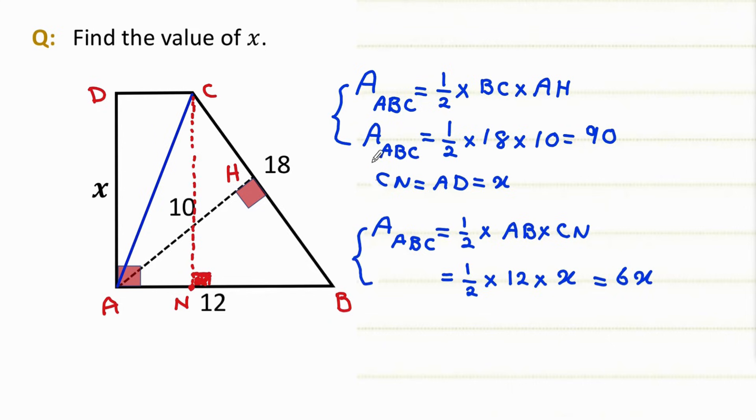But the area of a triangle is independent of choosing the base. That's why the area by this calculation and the area by considering AB as the base should be the same. That's why 90 equals 6x.